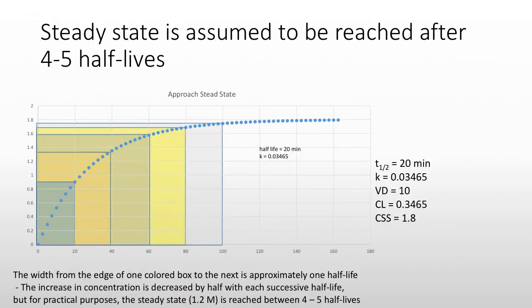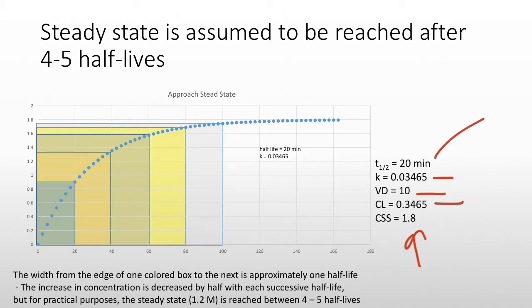Let's review what half-life means. I graphed this in Excel using a first order rate law. The half-life is 20 minutes, k is 0.03465, volume of distribution is 10, so clearance is 0.3465. The concentration steady state I calculated is 1.8. At the half-life of 20 minutes, my steady state concentration is 1.8. I come up to 0.9 — half of the steady state — in one half-life.